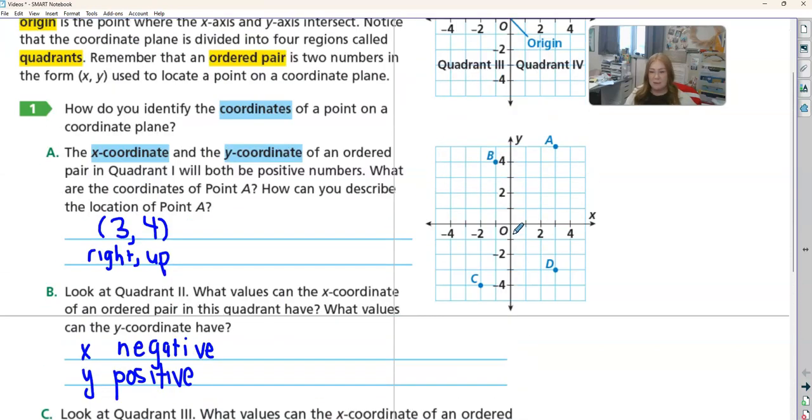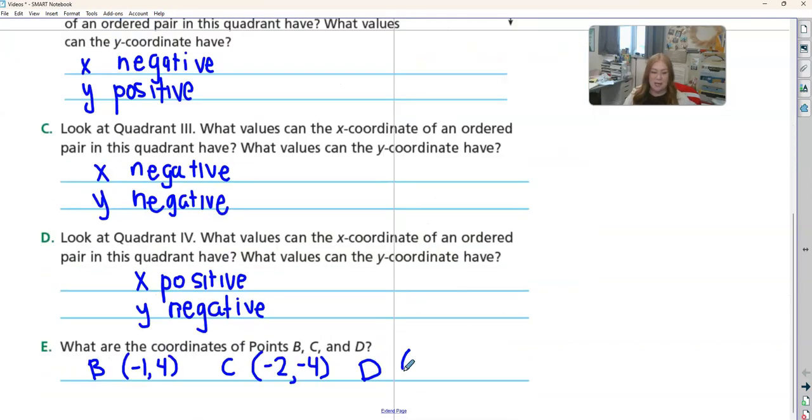And then d, we start at our origin, 0, 0. We're going 3 units to the right, positive. And then down 3, so we have positive 3, negative 3.